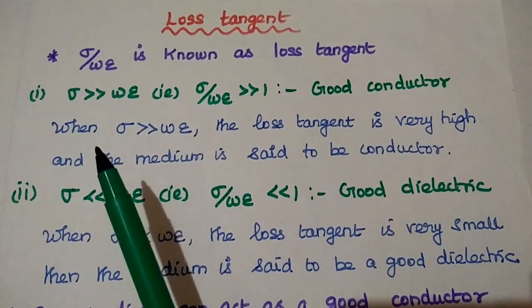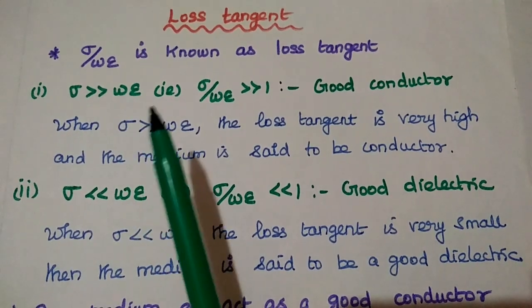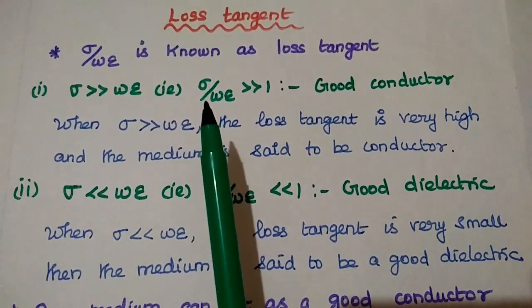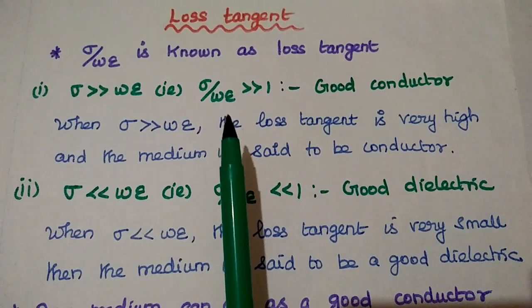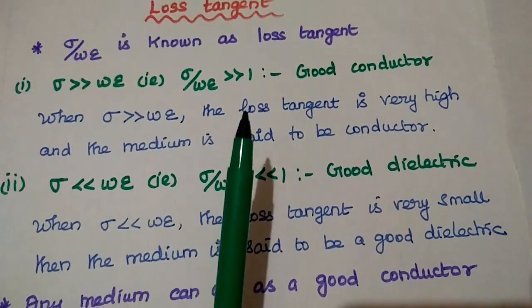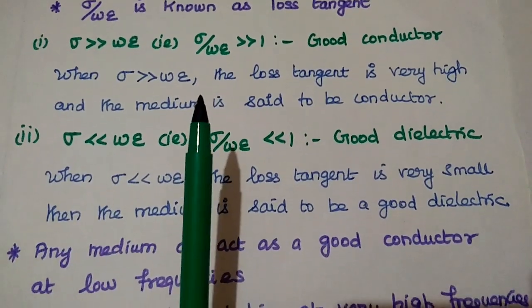Whenever sigma is much greater than omega epsilon, that is, the loss tangent value is very high, the medium can act as a good conductor.